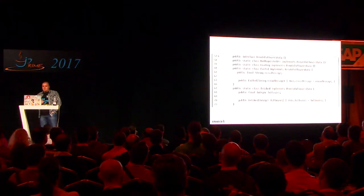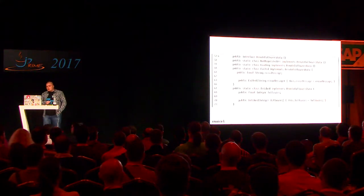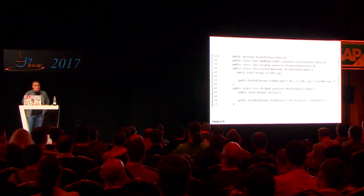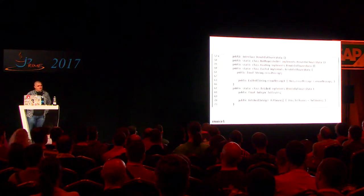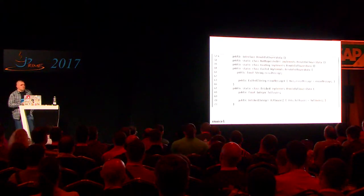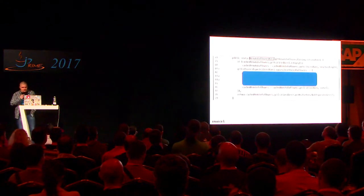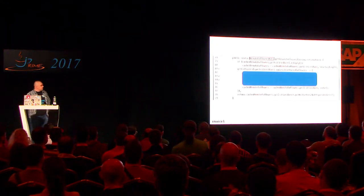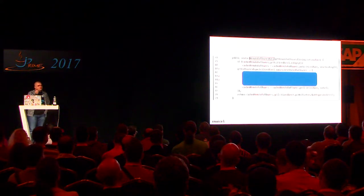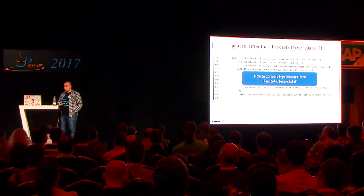Let's try to model our result type as an ADT. We want a public interface RemoteFollowersData as our sum type with four concrete subtypes: NotRequestedYet — when we haven't requested anything from the database; Loading — we've requested but haven't heard back yet; Failed — which carries an error message; and Fetched — the success case with the integer count of how many followers the user has.